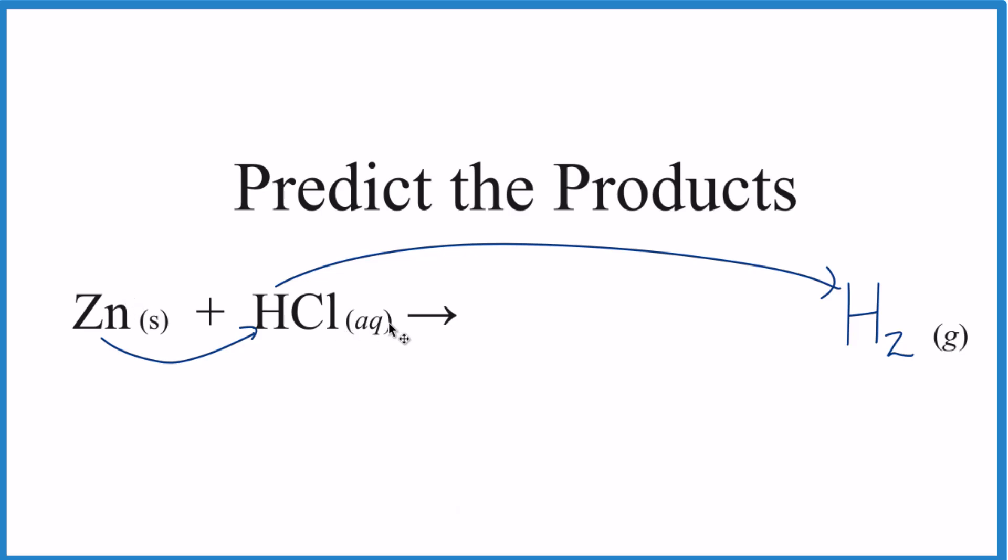The zinc, now that's with the chlorine, so we end up with ZnCl. But because we have a metal and a non-metal, the charges need to balance. Zinc, that's always 2+, and the chloride ion, always 1-, so we're going to need two of these. So we end up with ZnCl2 plus H2 as the products.